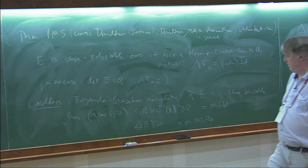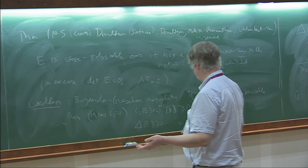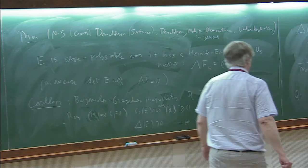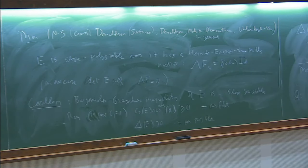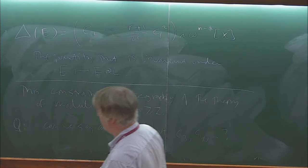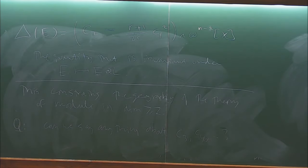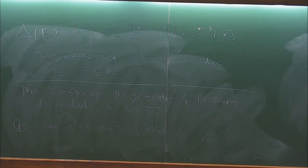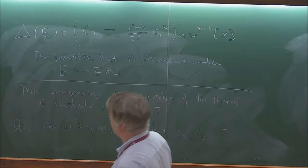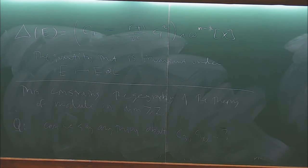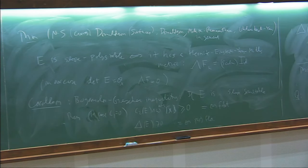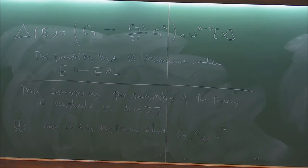That's the Gieseker inequality. Let me take a break and go back to what I wanted to discuss yesterday, and then come back to my more precise comments about geography of moduli spaces. The corollary should be obvious: if we have a metric with lambda F = 0, then ch2 is nonneg; if equality holds, the curvature is zero, so it's flat.